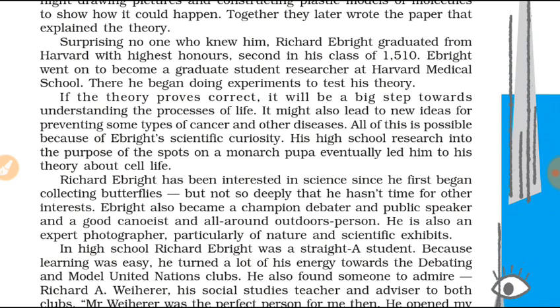Richard's research on the hormone gave him an idea — he believed his study could explain how cells read their DNA. He worked on this idea with his college roommate James R. Wong, and together they wrote a paper explaining their theory about the DNA of the monarch butterfly.